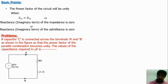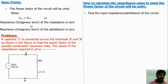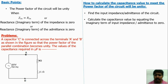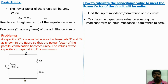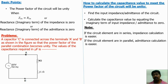This question is asked in the GATE examination. The procedure is: first, find the input impedance or input admittance of the circuit. Second, calculate the capacitance value by equating the imaginary part of input impedance or admittance to zero, because if the imaginary part of input admittance is zero, the power factor is unity. Note: if circuit elements are in series, find input impedance; for a parallel circuit, admittance calculation is easier.